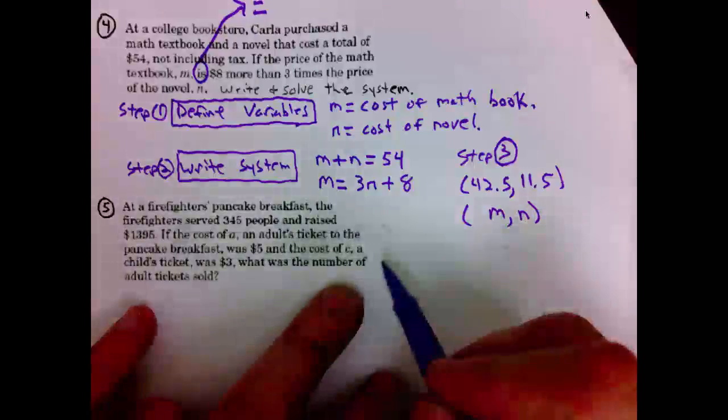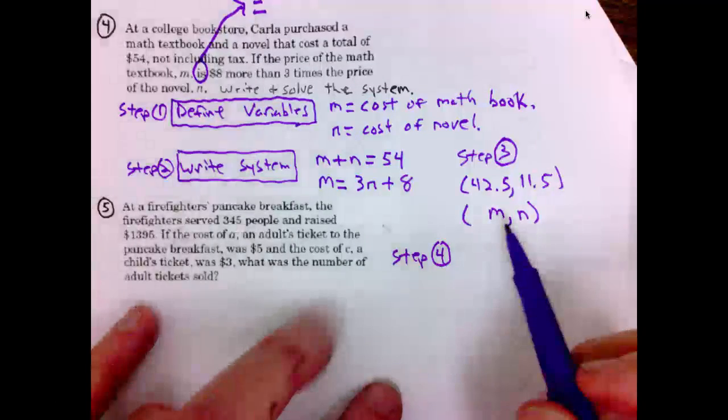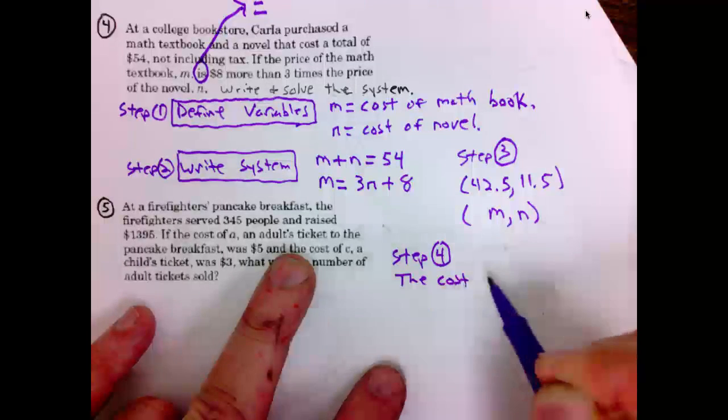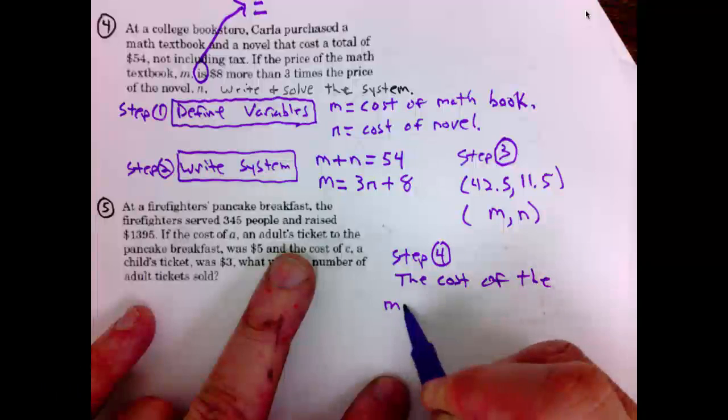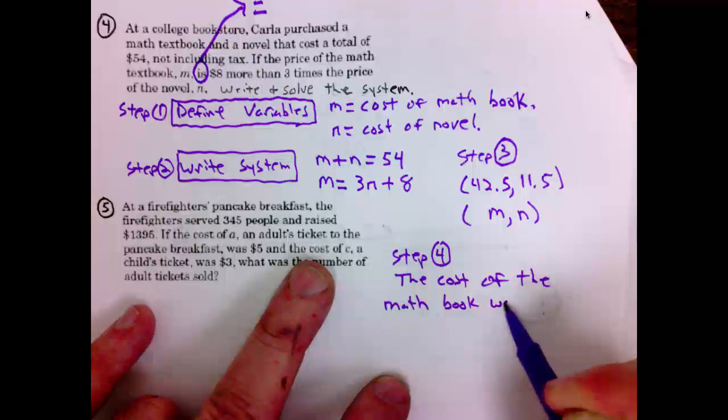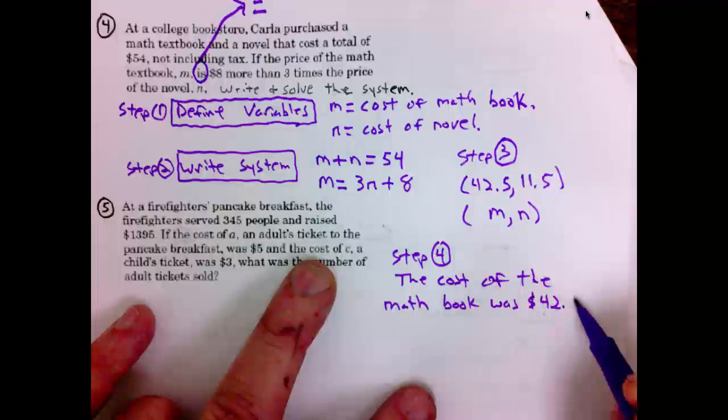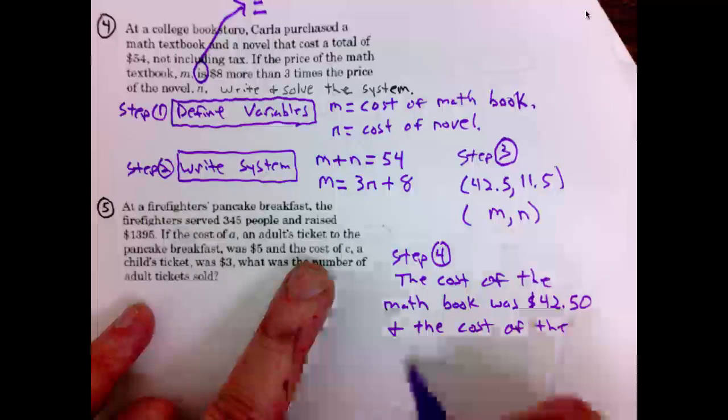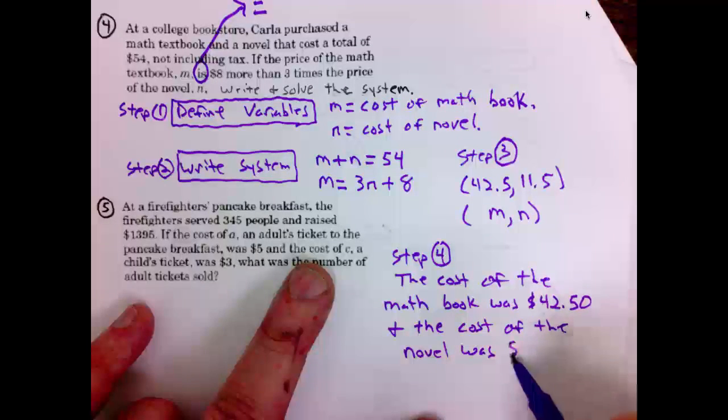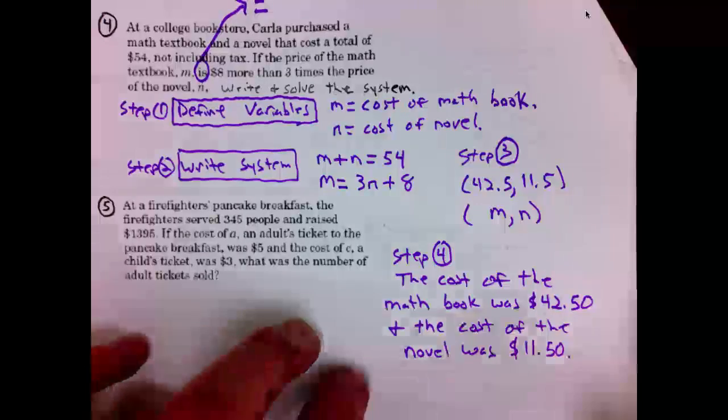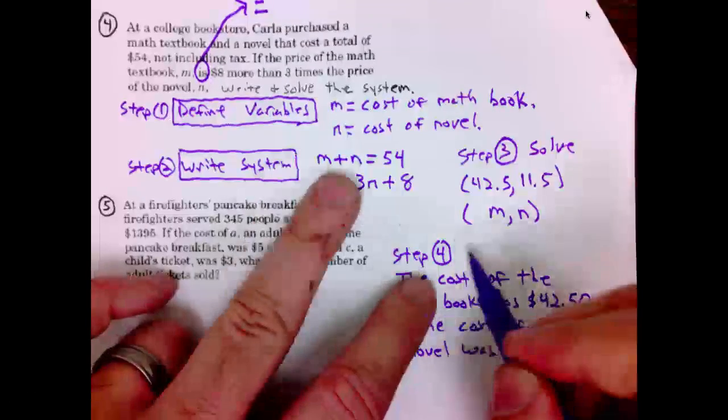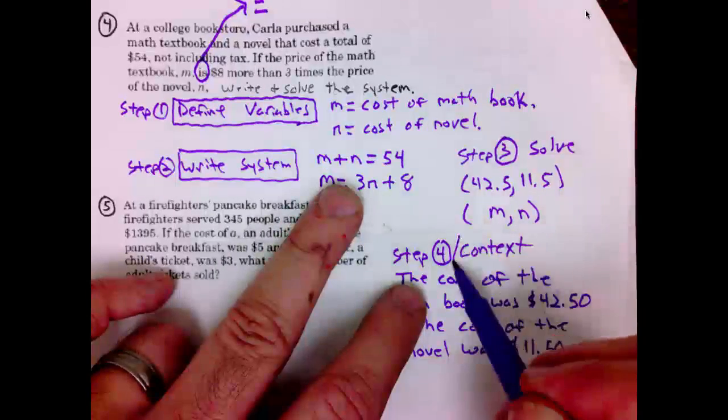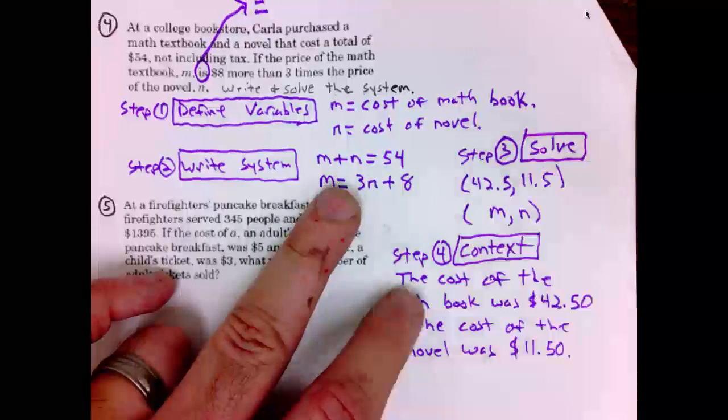So, step 4, we will write our solution in context. Step 4, m is the math textbook, it costs this much, n is the novel, it costs this much. The cost of the math book was $42.50. And, the cost of the novel was $11.50. Alright, step 3 was to solve, and step 4, context. Tell what this solution represents. That is problem number 4.